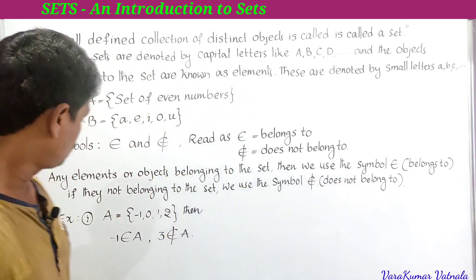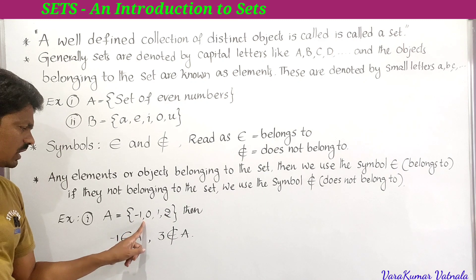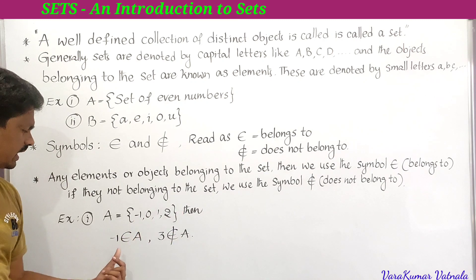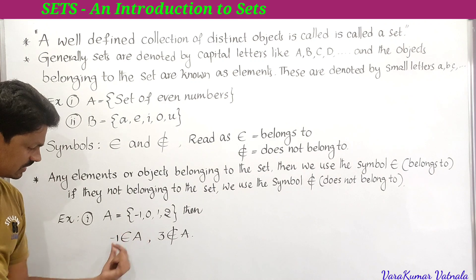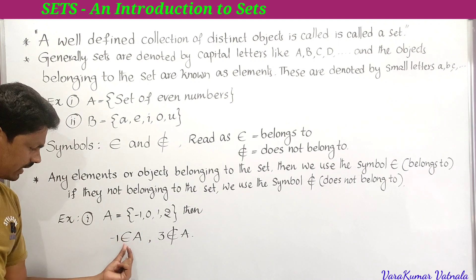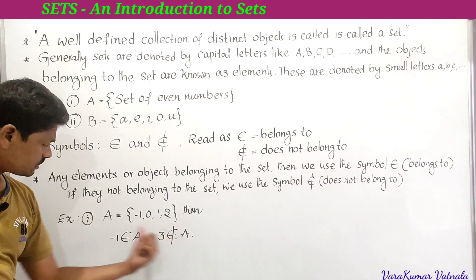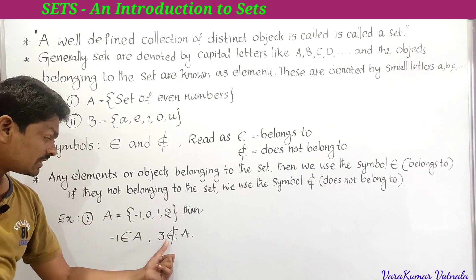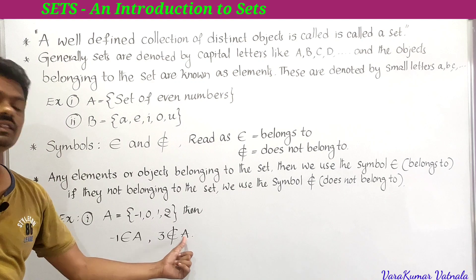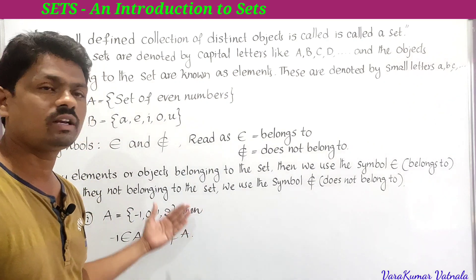Example: Let A = {-1, 0, 1, 2}. Then -1 ∈ A, since -1 is in the set. And 3 ∉ A, since 3 is not in the set.